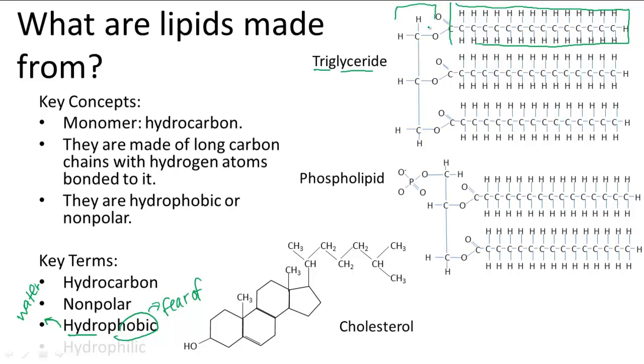Phospholipids have two fatty acids, plus a phosphate group, all attached to the glycerol. Just remember, phospho refers to the phosphate group, and lipid refers to the two fatty acids.